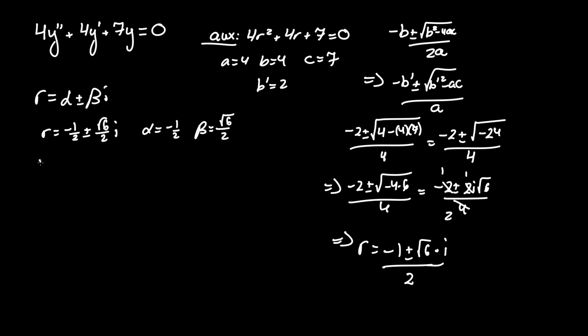We have all we need now to create our solution. So y homogeneous in this situation equals e to the alpha t, where t is any random independent variable, and we can choose a random variable since they don't provide one in the problem.